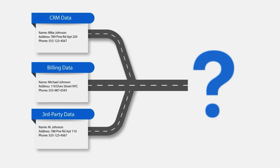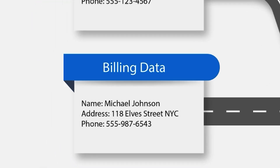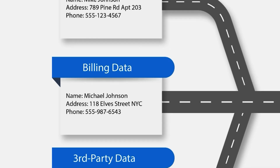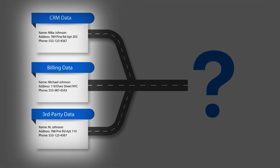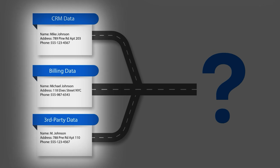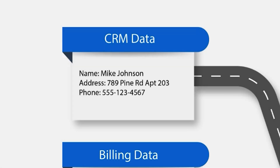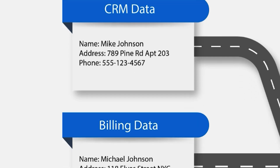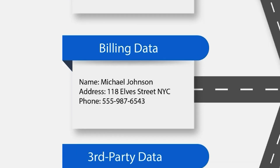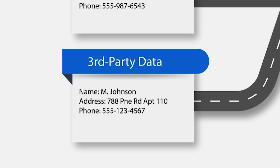Here's a classic example of variations in customer data. As you can see, Michael Johnson is a customer at a company and his information is recorded in three different data sets of the same company. In the CRM, his name is Mike Johnson. In billing data, his name is Michael Johnson. And third-party databases record him as M. Johnson.